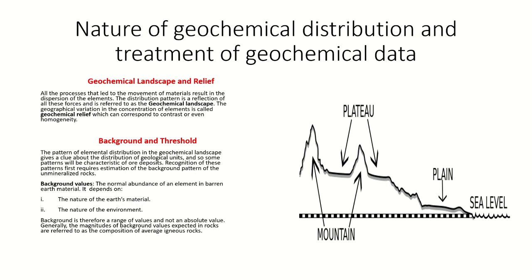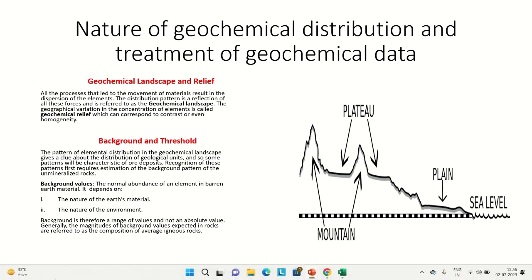Background values vary as a result of variation in the environment and also depend upon the nature of earth's material — whether we are looking in the soil, in glacial till, or in organic debris. The background is therefore not seen as an absolute value; it is rather a range of values. For convenience, the magnitude of background values expected in rock is taken as the composition of average igneous rock — that is, felsic or mafic rock — and not the ore deposits.